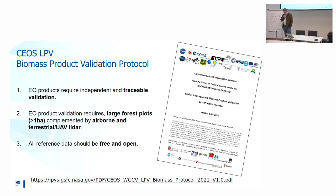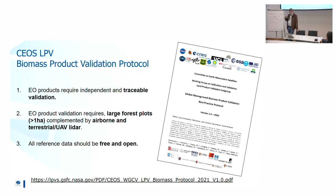This is another activity: producing a protocol on how to properly validate remote sensing-based maps, published already a few years ago. The major points in this protocol are that data should be traceable, large forest plots of more than one hectare are needed — because most forest plots currently used are smaller — and measurements should be complemented not only by classical measurements but also by airborne and terrestrial LiDAR data. It is also quite important to make data free and open so that everyone can use it.